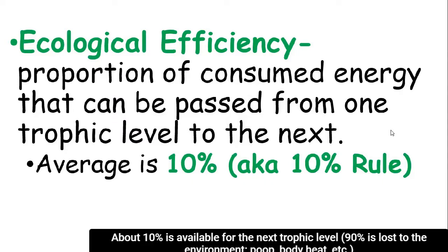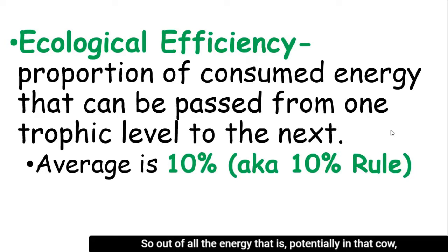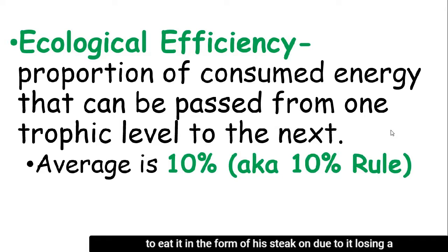About 10% is available for the next trophic level. So out of all the energy potentially in that cow, really only 10% of that is available for me if I want to eat it in the form of a steak, due to it losing a lot of its energy along the way.